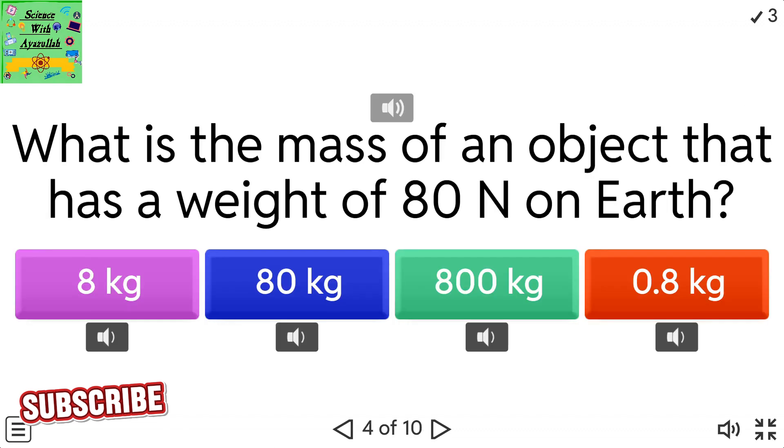What is the mass of an object that has a weight of 80 newtons on Earth? 8 kilograms. 80 kilograms. 800 kilograms. 0.8 kilograms.